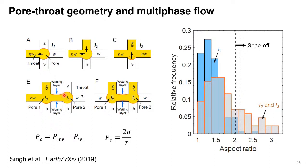We looked into aspect ratios — the ratio of the radius of a pore to the throat where movement or the pore filling event is happening. The histogram of all pore filling events shows that mostly events happen at aspect ratios less than two, mostly around 1.5. When we looked at snap-off including trapping, we got a threshold close to two. We did the same for I2 and I3 events, and the snap-off threshold was very close to two.